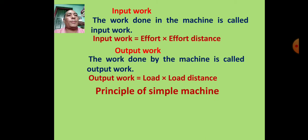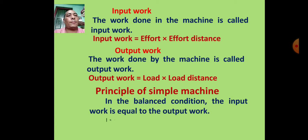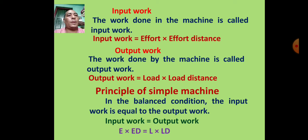The principle of simple machine states that in the balanced condition, the input work is equal to the output work. Mathematically, effort times effort distance equals load times load distance (E × ED = L × LD).